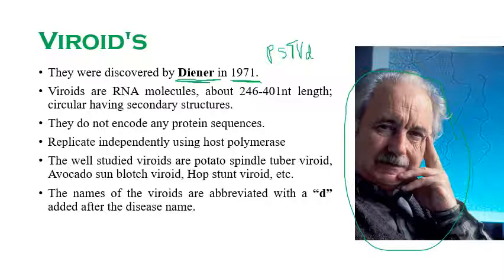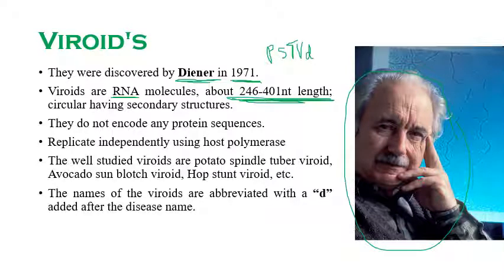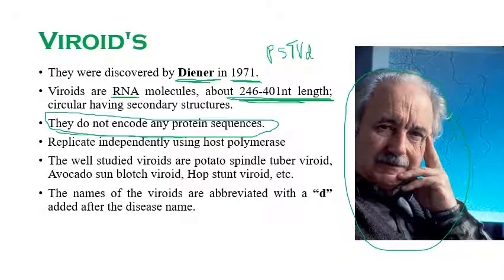The viroid definition: viroids are small RNA molecules. The viroid genome contains only RNA — no DNA viroid has been discovered so far. All viroid genomes are composed of single-stranded RNA molecules. The size ranges from 246 to 401 nucleotides in length. Very importantly, viroids do not code their own protein sequences.